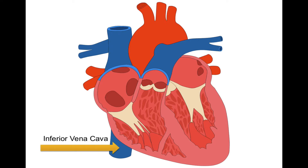Then we have the inferior vena cava. Blood from below the heart ultimately comes through this large vein. Think abdominal area, thigh, leg, knee, ankle, etc. All the blood used from beneath the heart — inferior to the heart — comes back to the inferior vena cava.